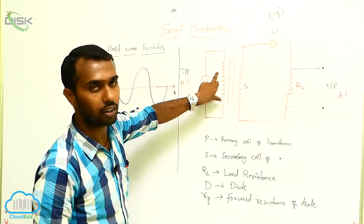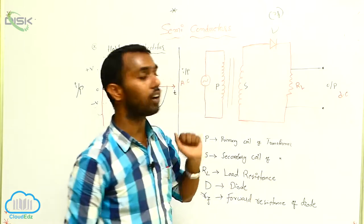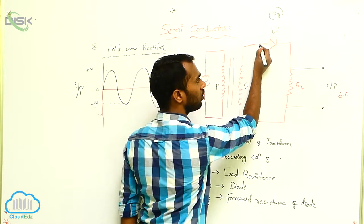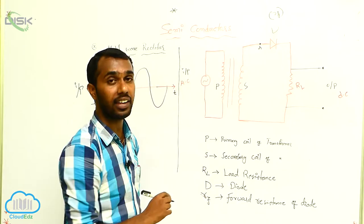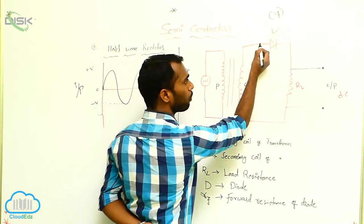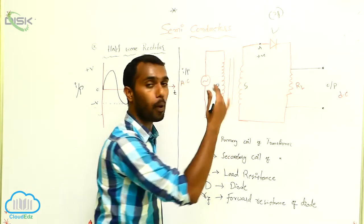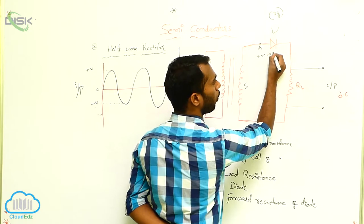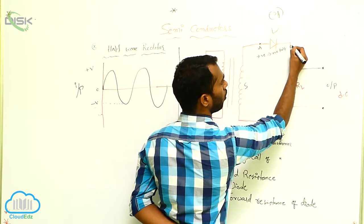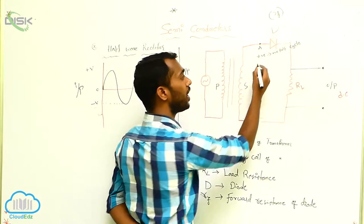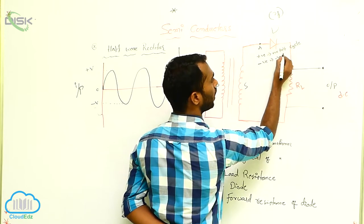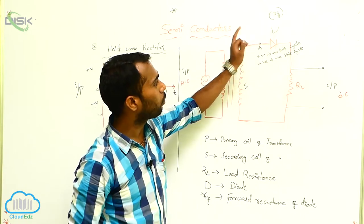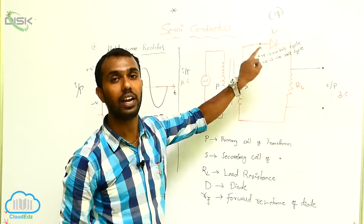I am applying AC current here, then you get here the output as DC current. AC is converting into DC. It is the diode. I am taking a point here — say the point name is A. You concentrate on point A. This A point behaves like a positive for positive half cycle, and this A point behaves negative for negative half cycle.